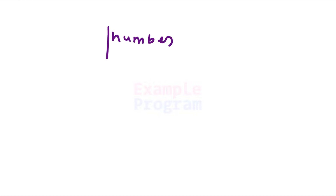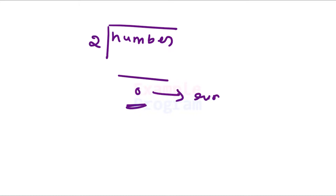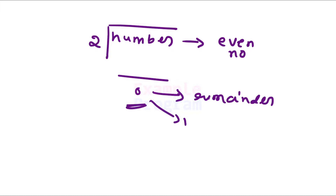Now, how can we say that a number is even or odd? If we divide a number by 2 and we get a remainder of 0, then that number is said to be an even number. If the remainder is a non-zero value, or 1, then that number is said to be an odd number.